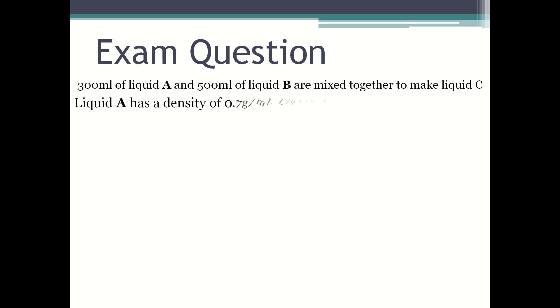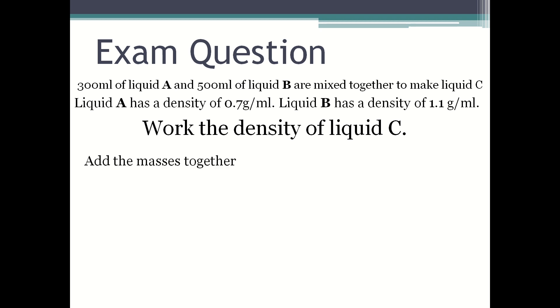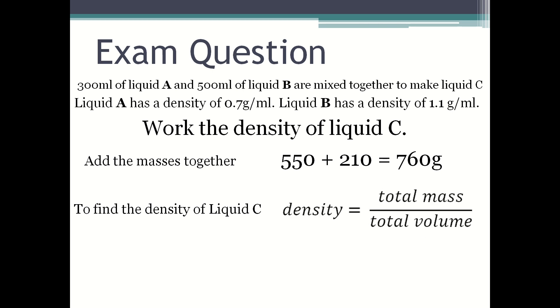Then you add the masses together: 550 plus 210 equals 760 grams. To find the density of liquid C, density equals total mass divided by total volume. Input the values into the formula: density equals 210 grams plus 550 grams divided by 300 milliliters plus 500 milliliters.